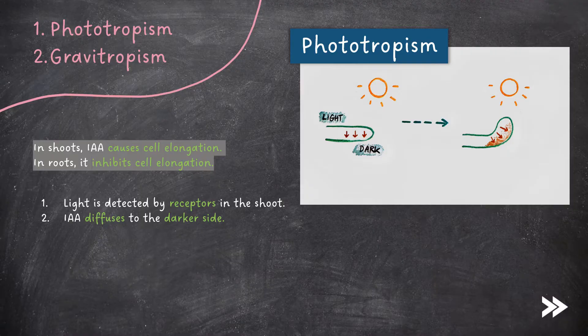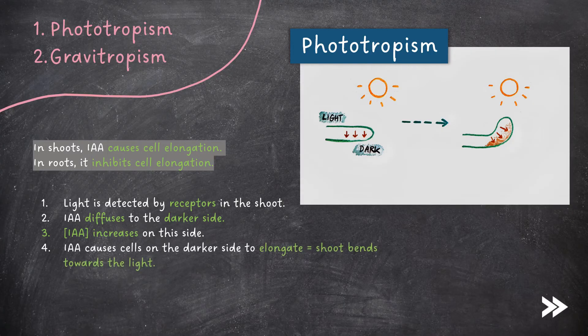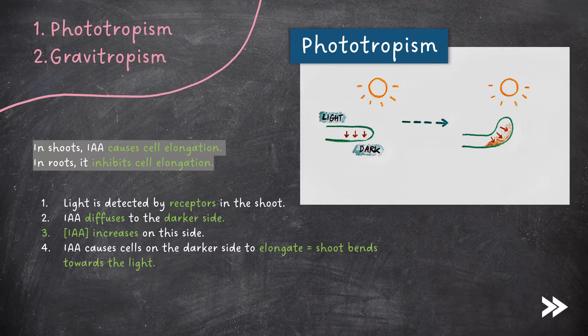IAA diffuses to the darker side, so the concentration of IAA increases on this side. IAA causes cells on the darker side to elongate, meaning that the shoot bends towards the light. This is known as positive phototropism, as the shoot is bending towards the light.